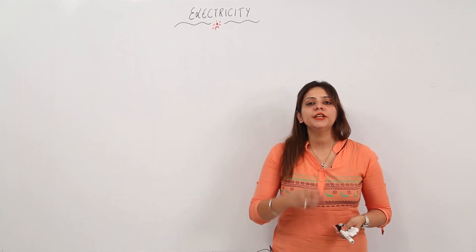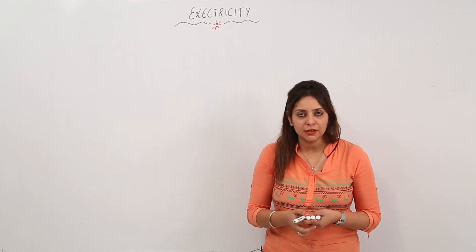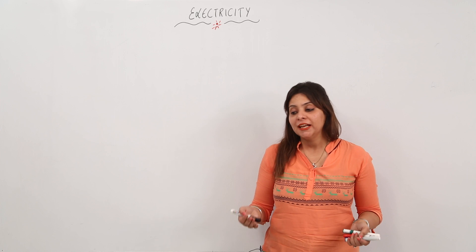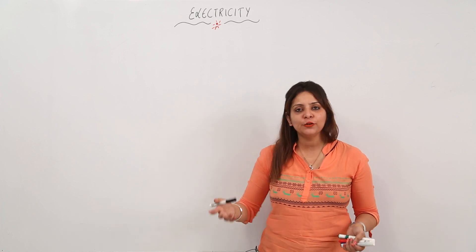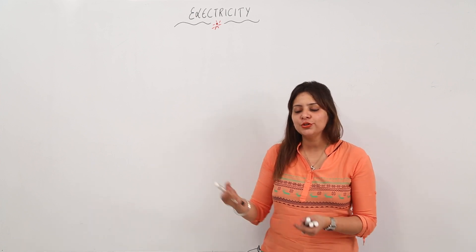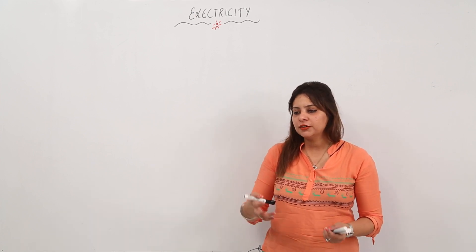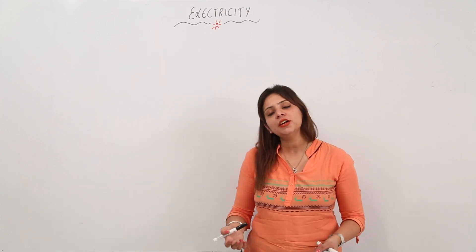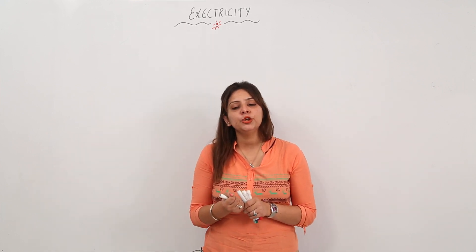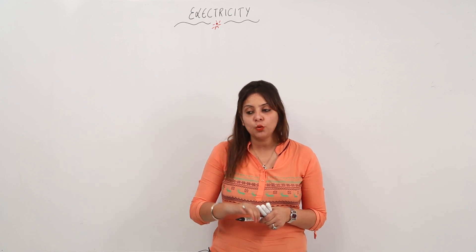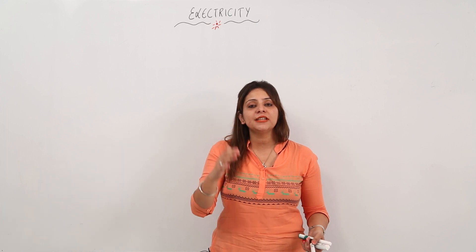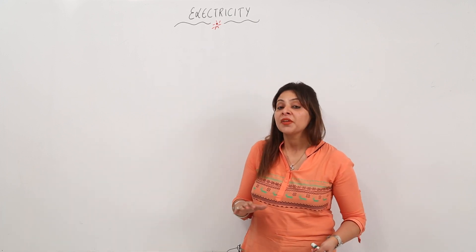We are going to start with a new unit: electricity. You are all familiar with electricity — it plays an important role in daily life. You use it for watching TV, hair dryers, tube lights, fans, and ACs. They all run on electricity. In this unit we are going to study what electricity is and what criteria determine whether some substances conduct electricity and some do not.